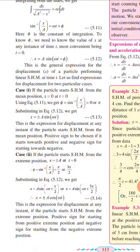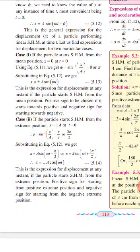Case 2: if the particle starts SHM from the extreme position, displacement equals ±A at t equals 0. This gives φ equals sin⁻¹(±A/A) equals π/2 or 3π/2. So X equals ±A cos(ωt). This is the expression for displacement when the particle starts from the extreme position. The key difference between the two cases is sine versus cosine: positive sign for starting from the positive extreme, negative for the negative extreme. There are two extreme positions and one mean position.